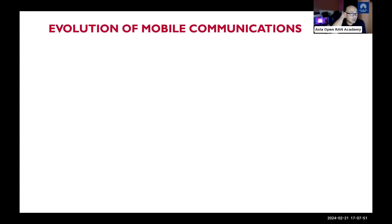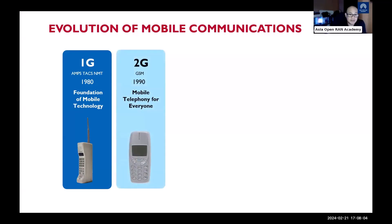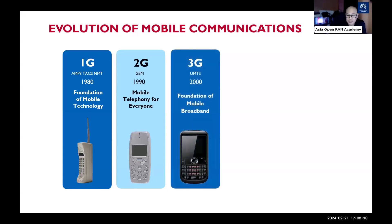Mobile communications have evolved through generations. 1G started in the 1980s with the birth of mobile technology. 2G in the 1990s introduced digital systems like GSM. 3G brought internet to our phones for the first time, enabling mobile internet connections.